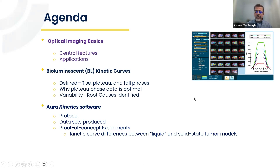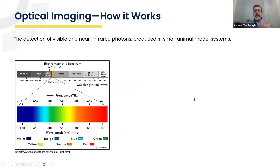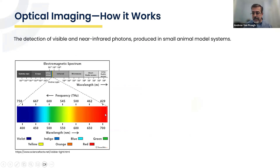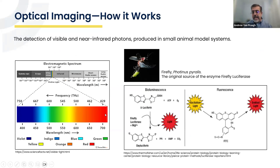As many of you already know, optical imaging is simply the capture of visible and near-infrared light photons, ranging in wavelengths from just below 400 nanometers all the way up through the visible spectrum and up into the near-infrared at about 1,000 nanometers. Typically, photons are generated in one of two ways in most of our animal in vivo optical imaging systems.